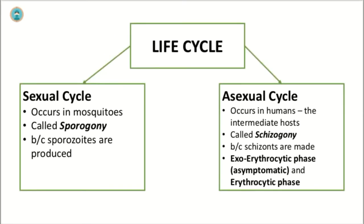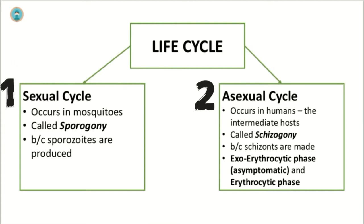The life cycle of plasmodium has two phases. The sexual cycle occurs primarily in mosquitoes and is also called sporogony because sporozoites are produced. The asexual cycle occurs in humans, the intermediate hosts, and is called schizogony because schizonts are made. The asexual cycle has two sub-phases: the exoerythrocytic phase occurring in hepatocytes, and the erythrocytic phase occurring in red blood cells.